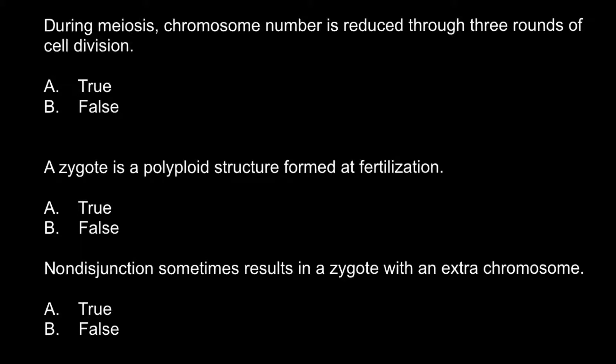Here is the first question: During meiosis, chromosome number is reduced through three rounds of cell division. Is it true or false?